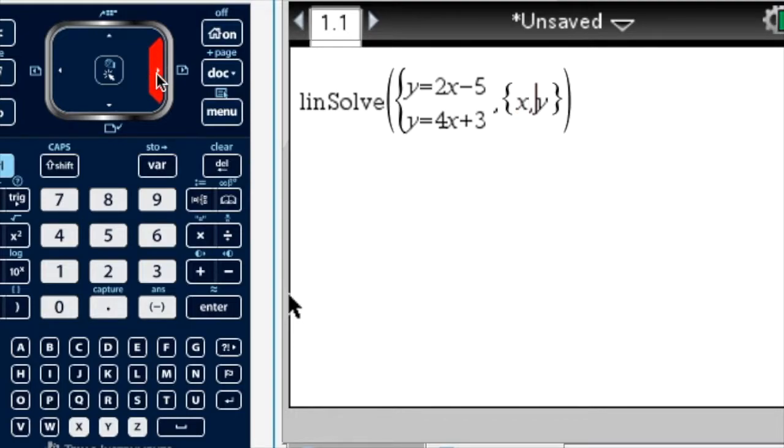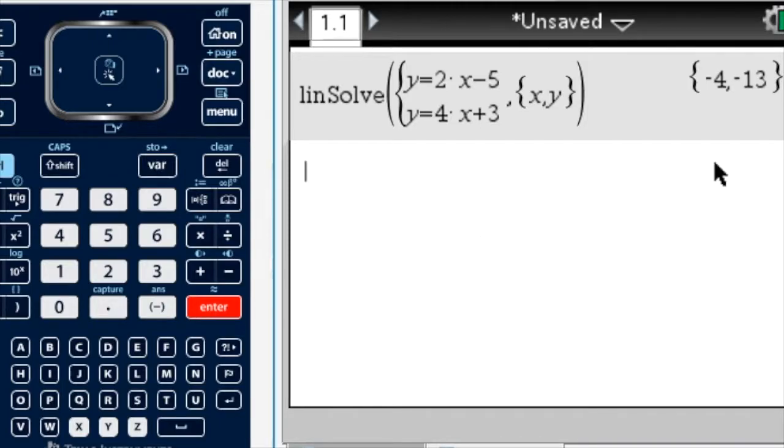Put x and y as our variables, so we're telling the calculator to solve it for x and y. Press Enter, and our solution to these simultaneous equations is x equals negative 4 and y equals negative 13.